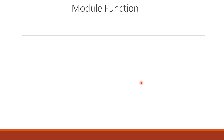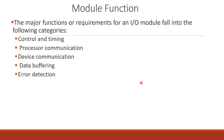The IO module acts as an interface between peripheral devices and the computer processor and memory. The functions of the IO module can be categorized as follows: first, control and timing; second, processor communication; third, device communication; fourth, data buffering; and fifth, error detection.